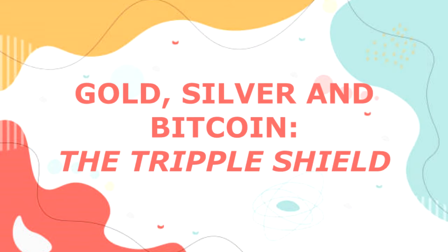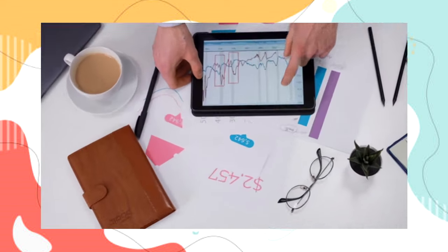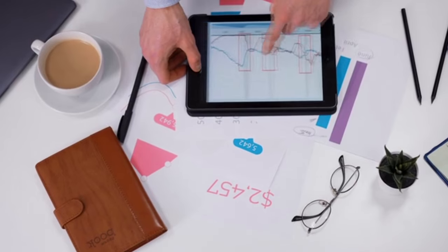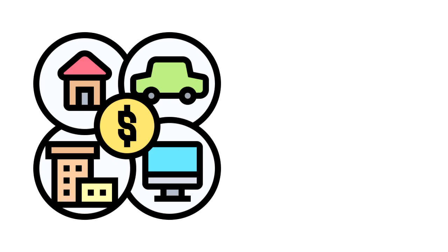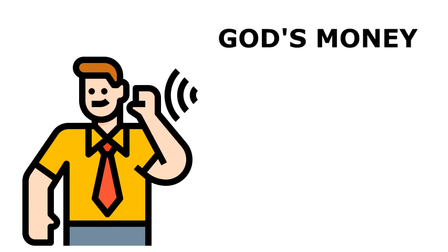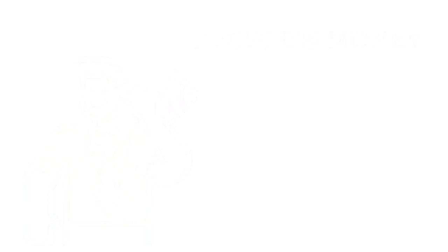Gold, silver, and Bitcoin. The triple shield. Delving deeper into Robert's financial mindset, there's a clear pattern that emerges: trust in tangible and decentralized assets. When you hear terms like God's money, referring to gold and silver, or the people's money, pointing to Bitcoin, it's not just catchy lingo. It's reflective of centuries of trust and a decade of decentralized revolution, respectively.